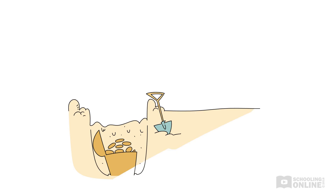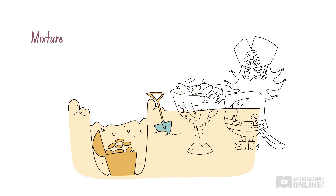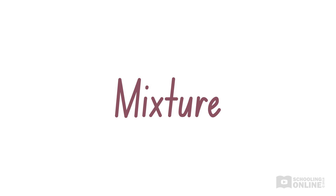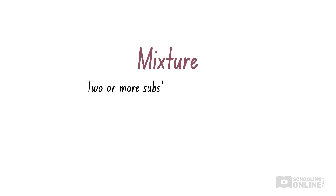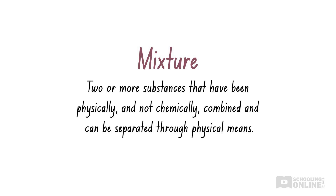The world around us is filled with naturally occurring mixtures. Quite often, we might want to separate these mixtures into their components so that we can collect useful or precious chemicals. In our earlier video, Pure Substances and Mixtures, we defined a mixture as two or more substances that have been physically, and not chemically, combined. Mixtures may contain combinations of gases, liquids and solids that can be separated through physical means.